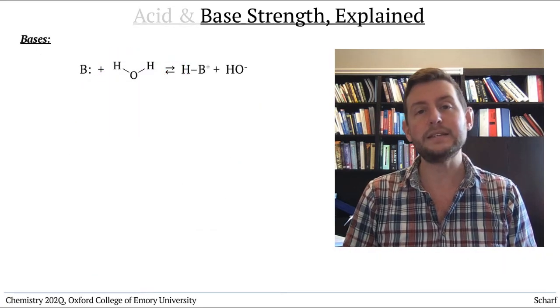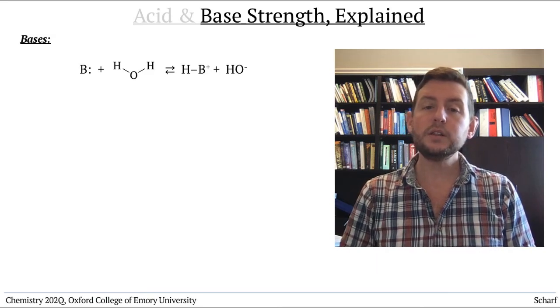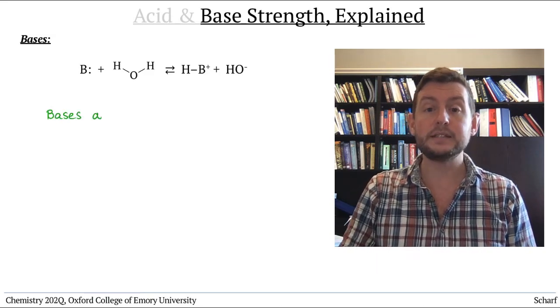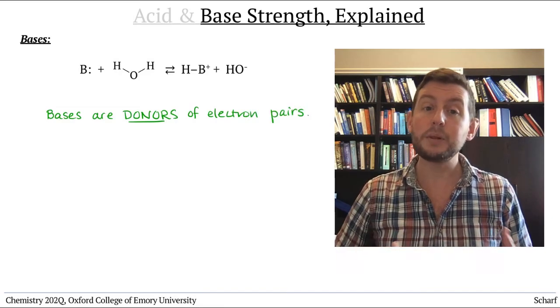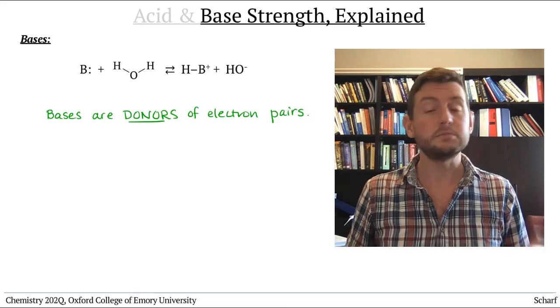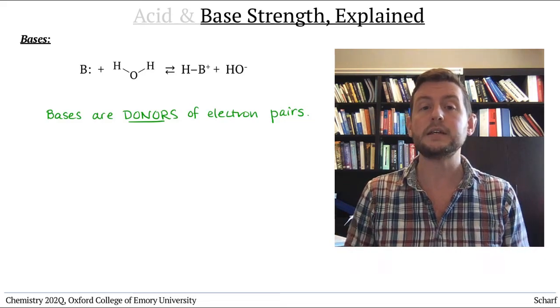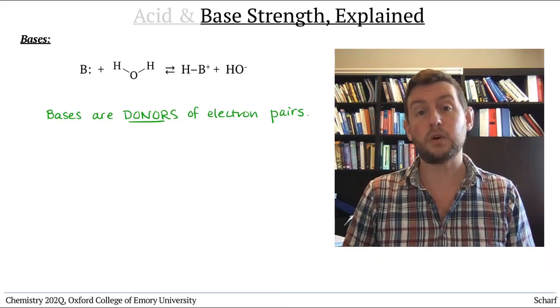Let's start with bases. According to the Lewis definition, a base is a donor of a pair of electrons. This definition applies to all other types of bases as well, Bronsted-Lowry and Arrhenius, so we'll use this broad definition.